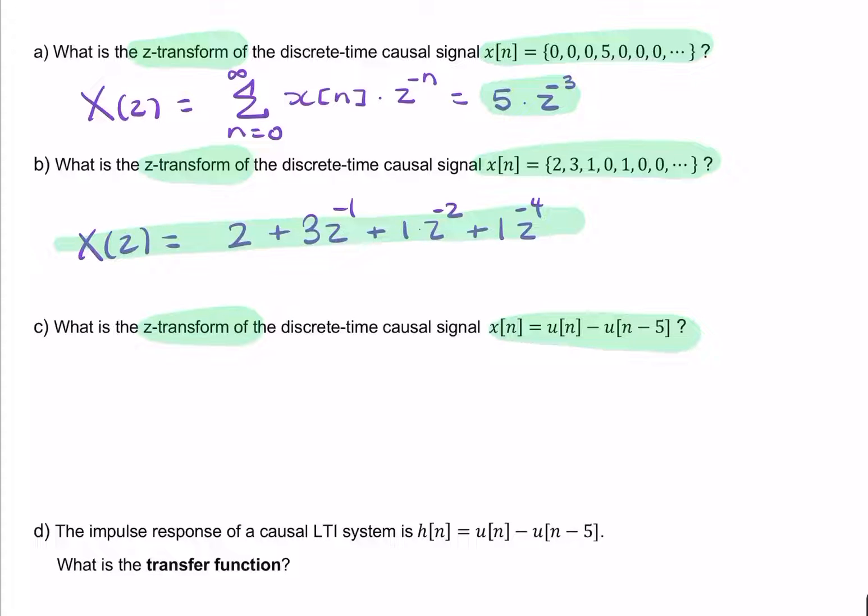For part c, similar, but this term, instead of actually telling us what x actually is in terms of samples, we're given x as an expression using unit steps. So if you imagine two discrete unit steps, so you have unit steps starting at n equals 0. So here we have n. So you'd have 0s for negative values of n, and then you'd have 1s here. So 0, 1, 2, 3, 4, 5, 6.